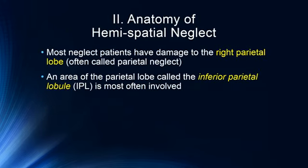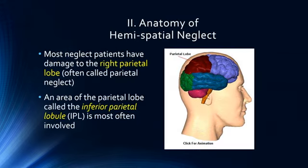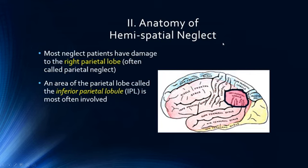Most neglect patients have damage to the right parietal lobe — again, this is often called parietal neglect. The area most often involved is called the inferior parietal lobule. Here we see the right parietal lobe, and the inferior parietal lobule is right in this area. On the left side, this is the left inferior parietal lobule — it's right at the intersection between the temporal lobe and the parietal lobe, just past the post-central gyrus, which is, of course, the primary somatosensory cortex.